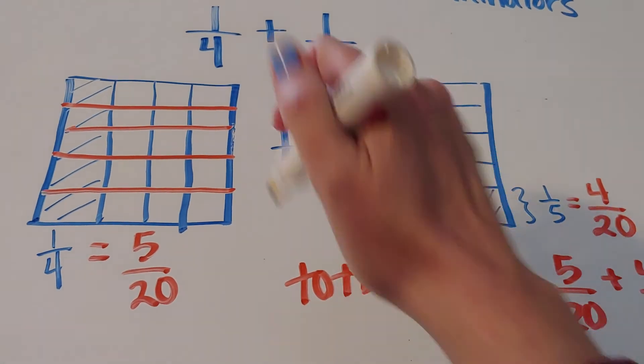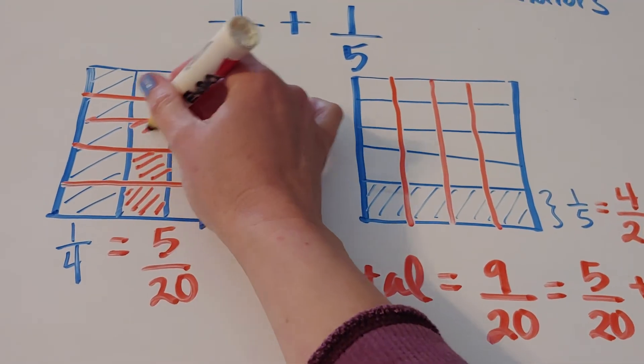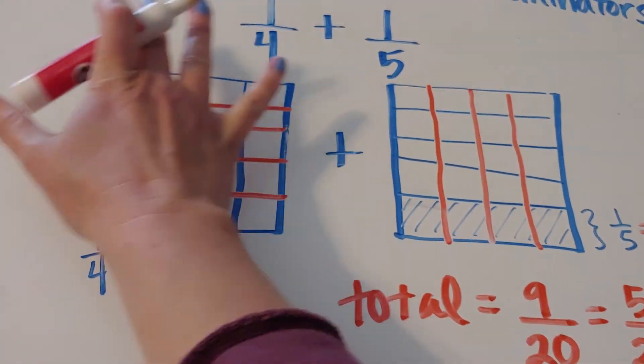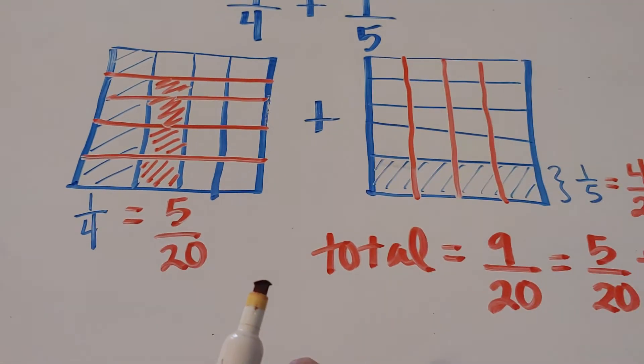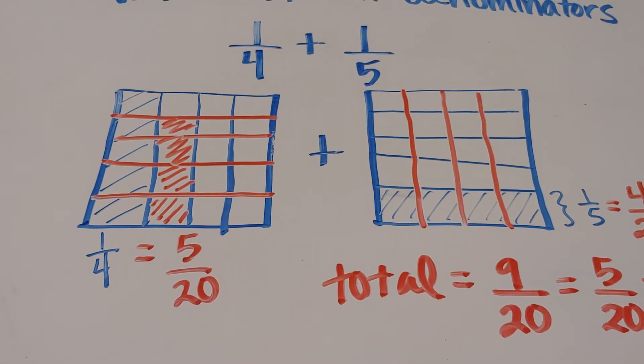So if you could imagine, we could shade these four onto the same picture to represent the nine-twentieths. All right, there's our example. I'll see you next time.